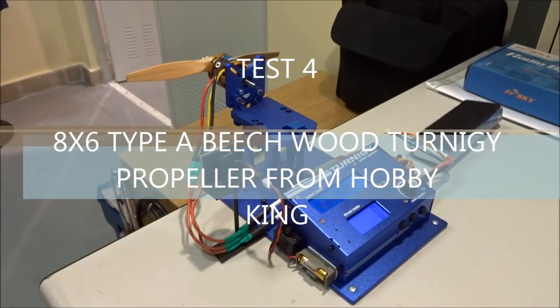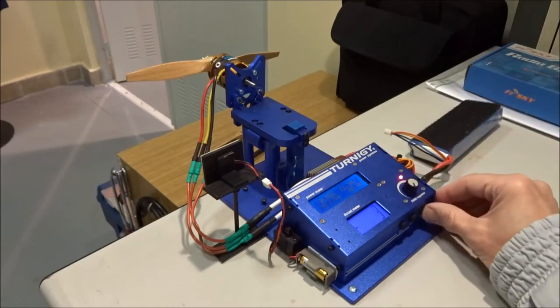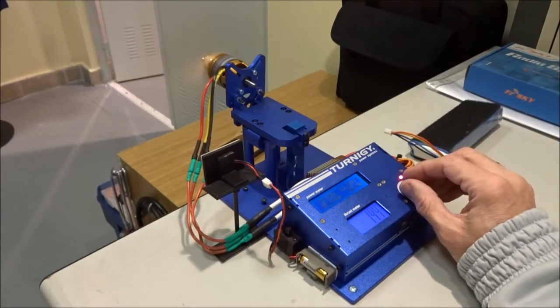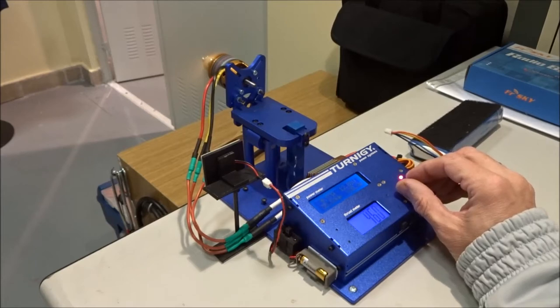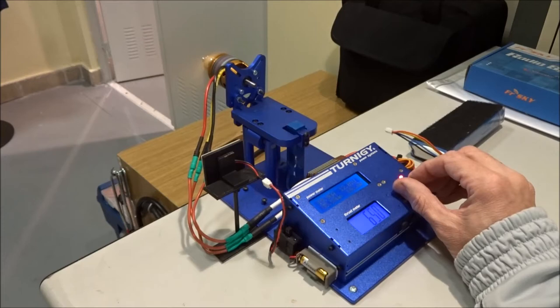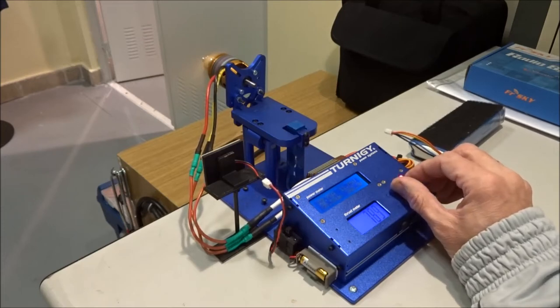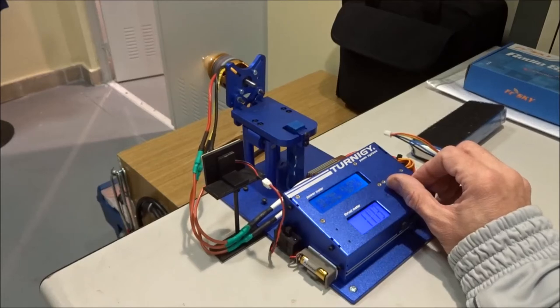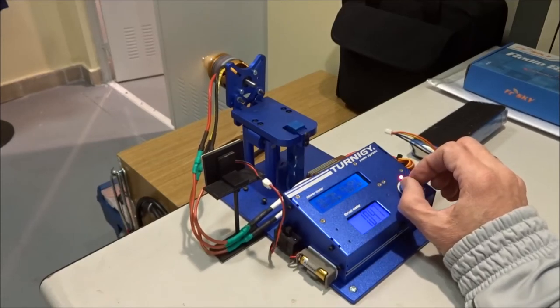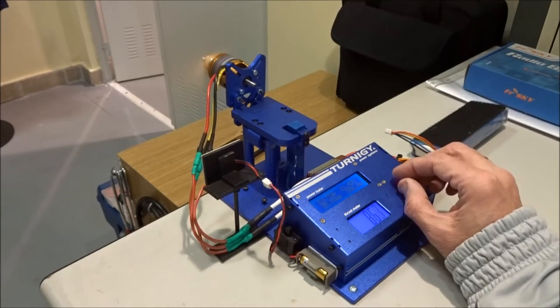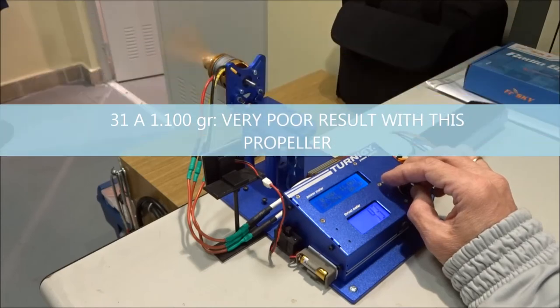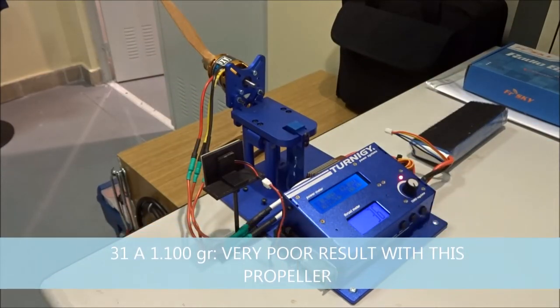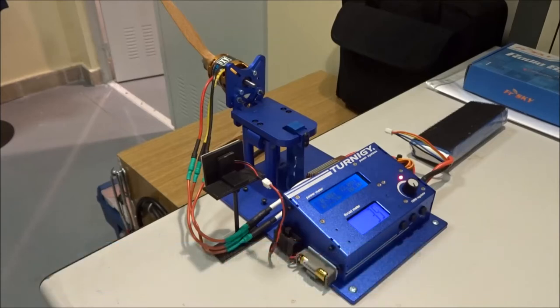This is a Turnigy wood propeller. Let's see how it goes. It's been one of the worst up now. Maximum thrust is around 1 kilogram but the consumption is really reasonable, it's 30 amps. But I expected much better results in this case.